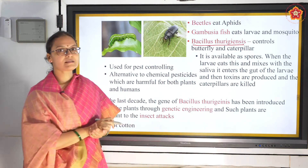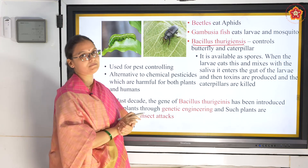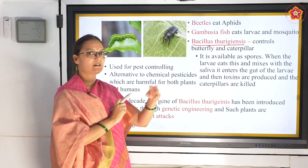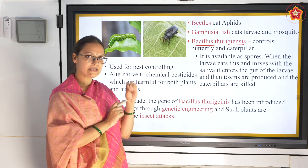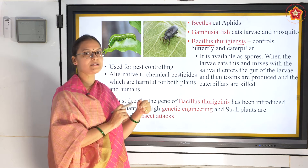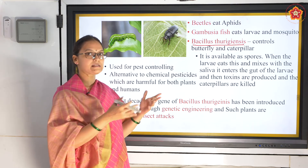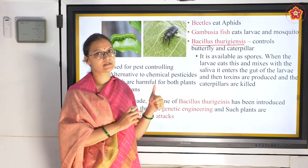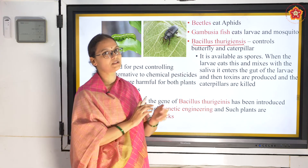Bacillus thuringiensis is a bacterium that affects caterpillar pests. It is available as a spore sprinkled on crops. As a caterpillar eats the spore, it is mixed with the caterpillar's saliva and enters its gut. There it releases toxins and kills the caterpillar. That is how Bacillus thuringiensis works as the first microorganism biocontrol agent.